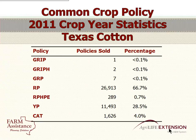So what are we buying? When it comes to cotton, the primary product is RP — about two-thirds of all policies sold in Texas were RP at 60-something percent. The next is YP, the yield protection, at 28.5%, and the other 4% in CAT, with less than 1% each for the other types of products.